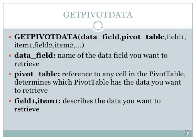GETPIVOTDATA is comprised of four primary parts: data field, pivot table, field 1, and item 1, with a maximum of up to 14 field and item pairs. Data field is the name of the data field you want to retrieve. Pivot table is a reference to any cell in the pivot table and determines which pivot table has the data you want to retrieve. Field 1 and item 1 describe the data you want to retrieve from the pivot table.